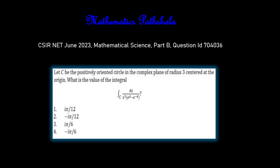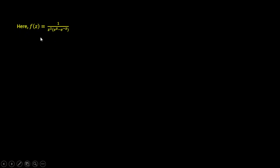This expansion is going to give us 1/z. We have a coefficient of 1/z, which gives us the residue. We multiply the residue by 2πi. So, f(z) is equal to 1/z² into e to the power z minus e to the power minus z.